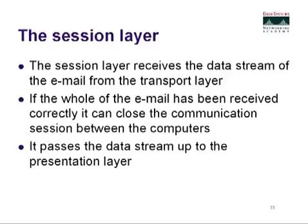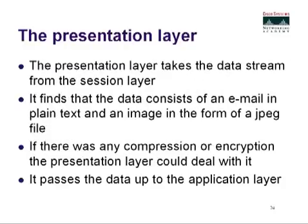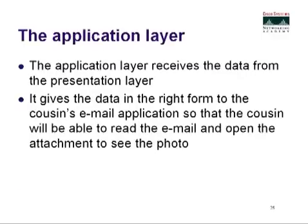We found out it's an email and it's been received correctly — now we send it up to the presentation layer to determine what type of encoding was used, whether it was a JPEG or bitmap, rich text or plain text. The presentation layer finds the data consists of plain text email and a JPEG image, and handles any decompression or decryption. It passes the data up to the application layer, which receives it and delivers it in the right form to the cousin's email application so the cousin can read the email and open the attachment to see the photo.